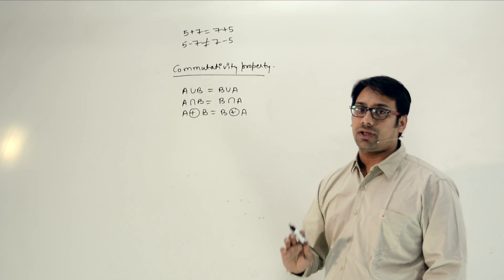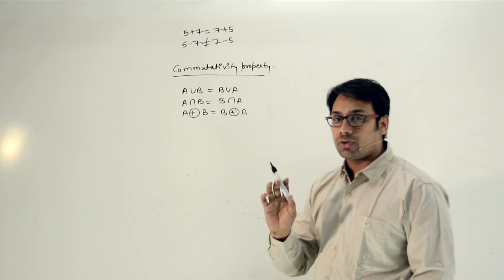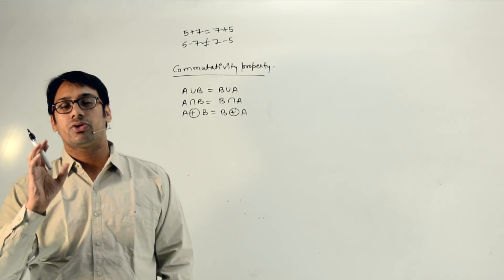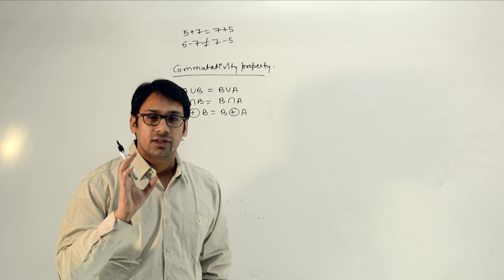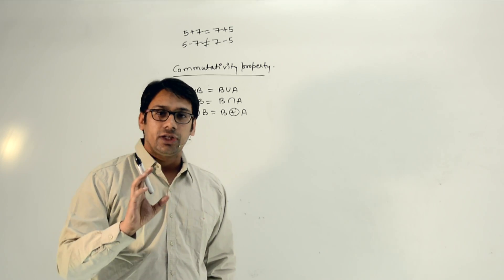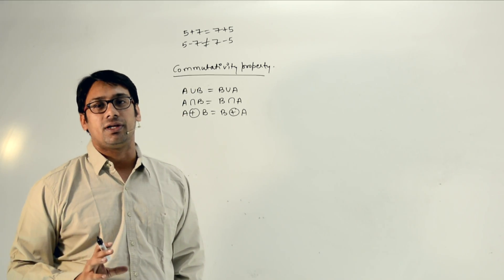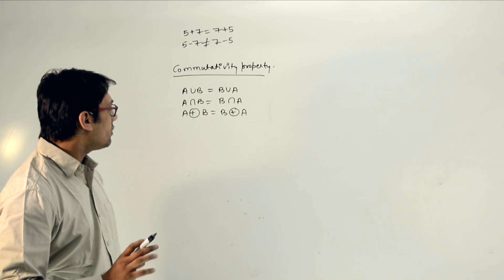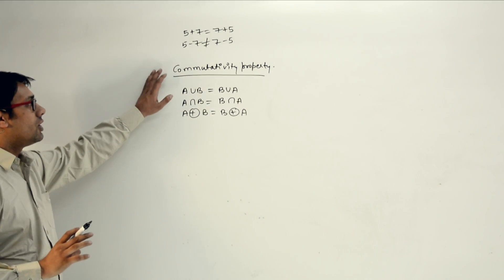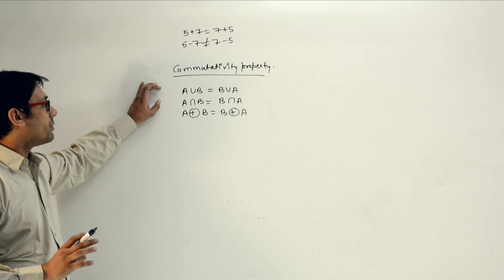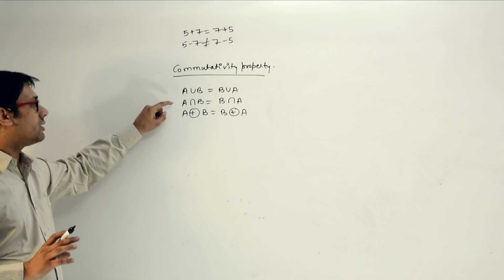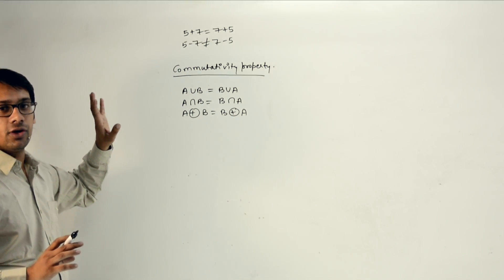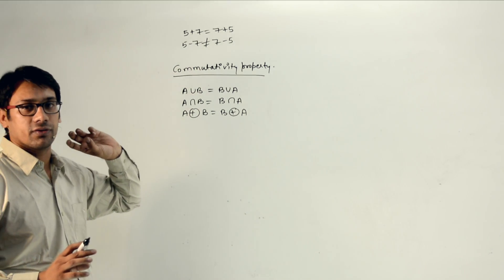In the same way, in set theory we follow operations like intersection, union, and symmetric difference. We need to study what properties these operators follow. In case of commutativity, union, intersection, and symmetric difference — all these are commutative.